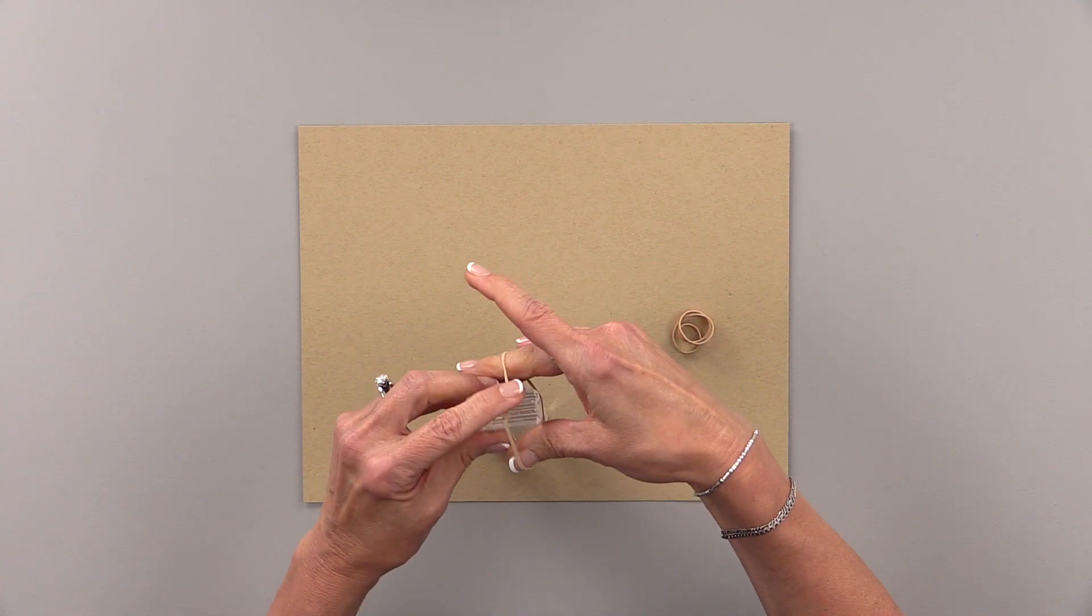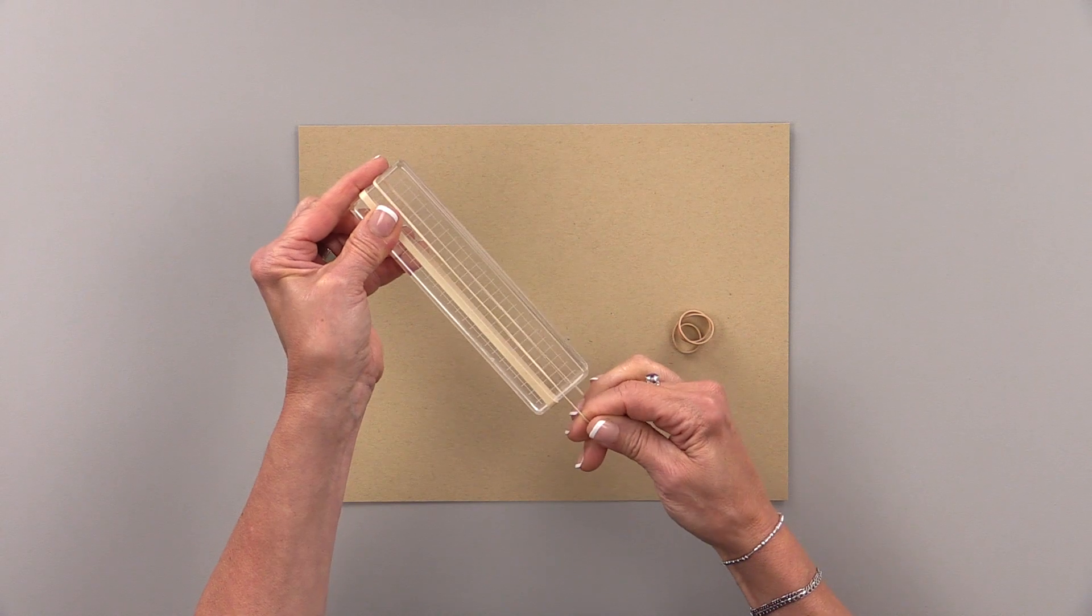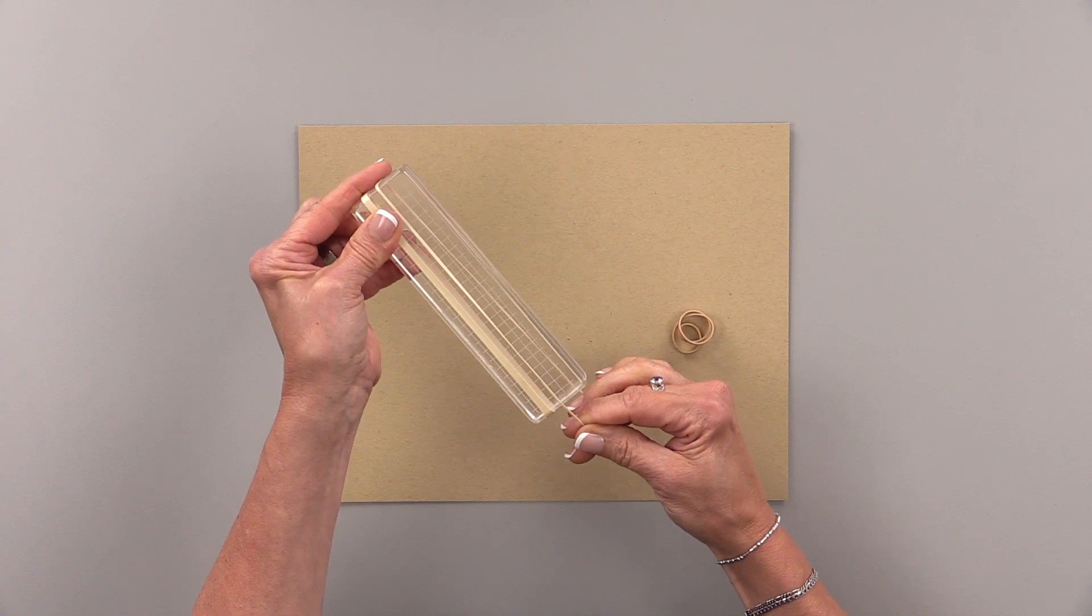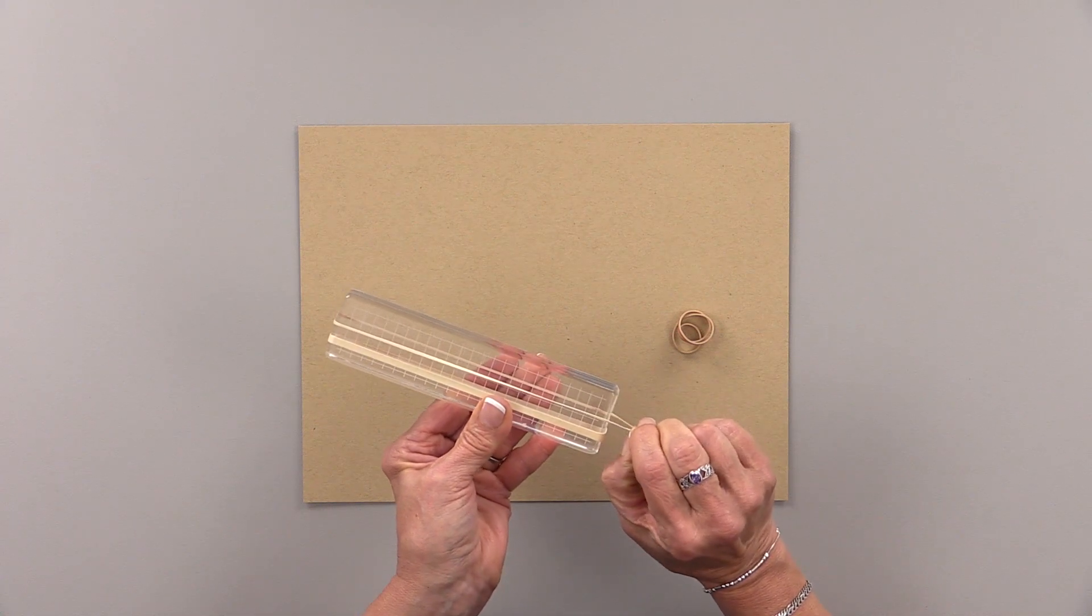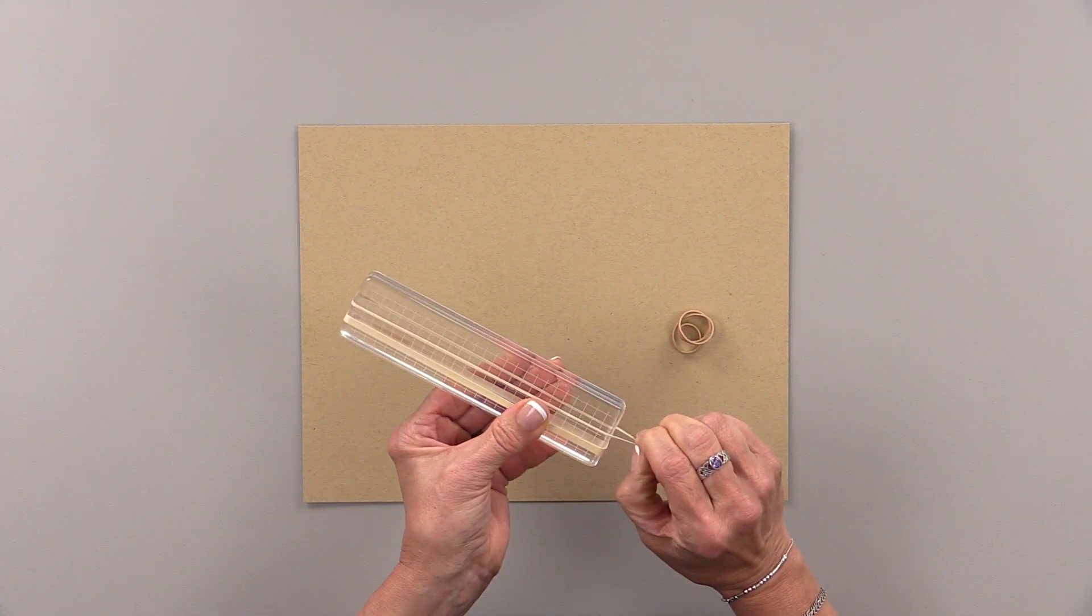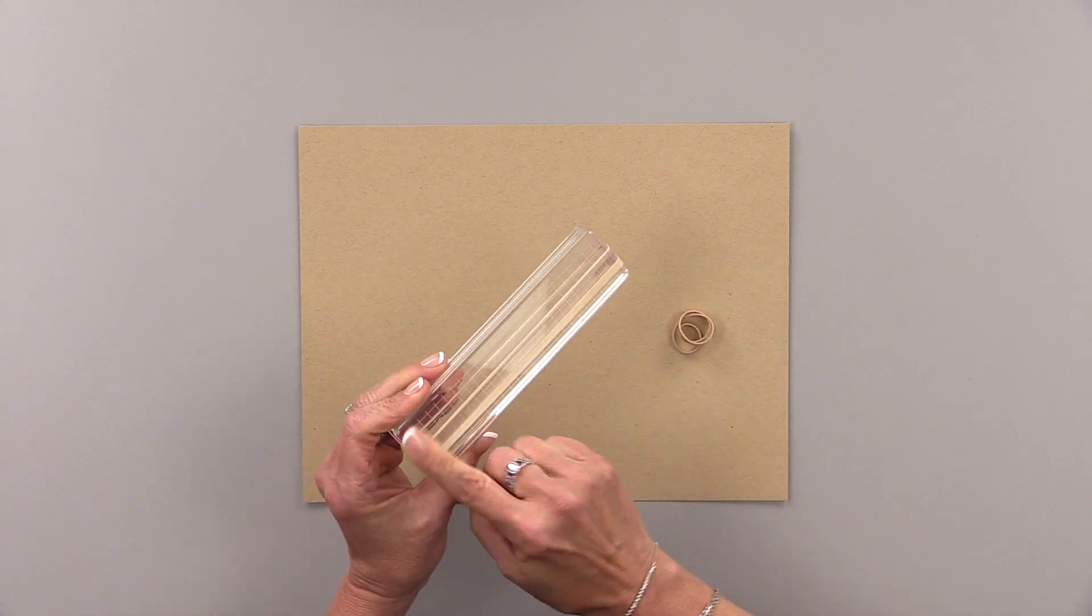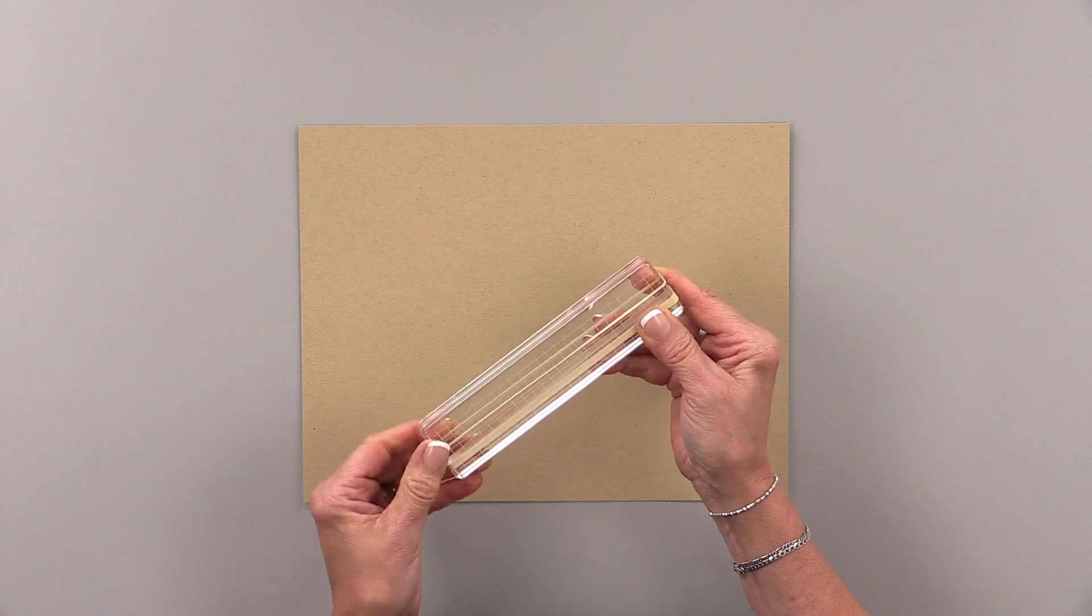My second rubber band is very skinny and I'm using the grid lines on the block to make sure that the rubber bands are straight. They don't have to be evenly spaced because plaids usually aren't evenly spaced. As long as they're straight and you can use the grid lines to make sure they're not twisted.